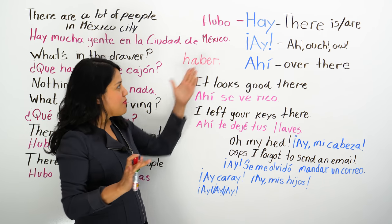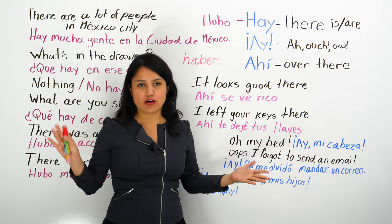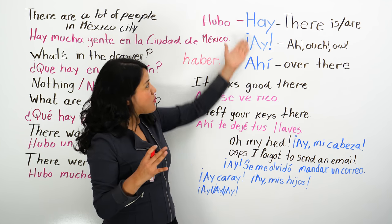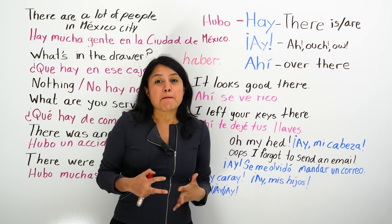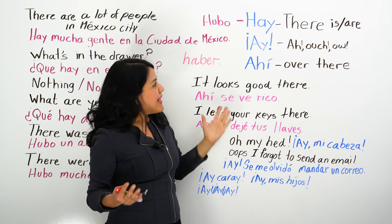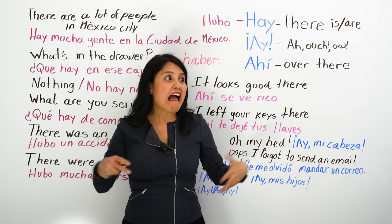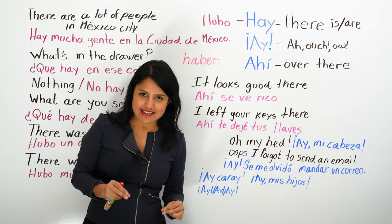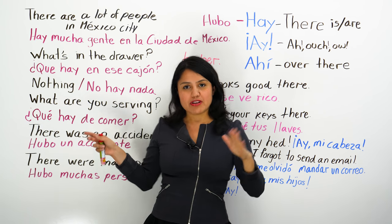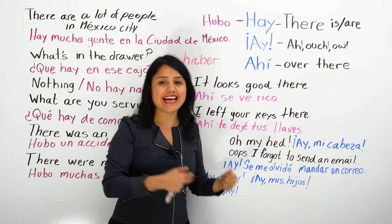Even though it's from the verb 'haber' — yo he, tú has, él ha — usually that needs a participle, like 'yo he venido a decirte' (I have come to tell you). But 'hay' is confusing because it's impersonal. It doesn't really have a person — it's equivalent to 'there is' and 'there are.' It's not 'yo he,' it's only 'hay.' And in the past, it is 'hubo.' The H is not pronounced — repeat after me: 'hay.'